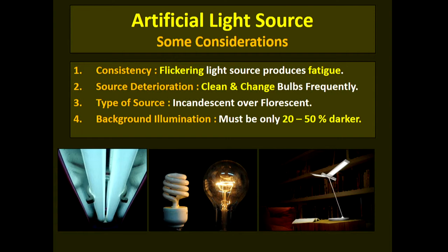There are certain considerations when using artificial illumination. The first is consistency — the source should produce consistent illumination with no flickering. A single fluorescent tube flickers and produces a lot of fatigue in low vision clients. You should use multiple tubes or an incandescent bulb, which does not flicker. Tungsten and fluorescent bulbs also suffer source deterioration, so they must be cleaned frequently and changed when the source deteriorates.